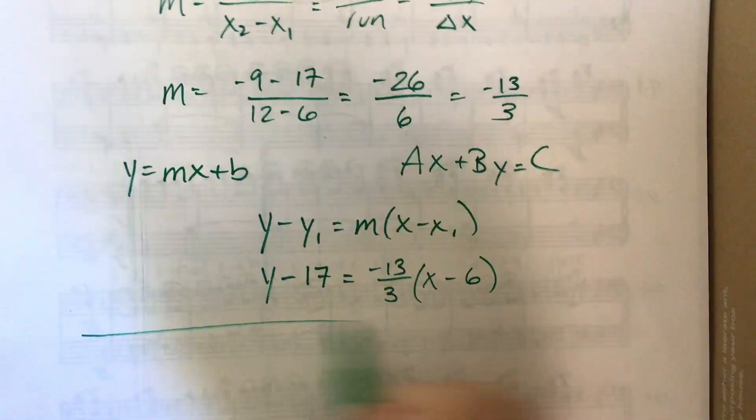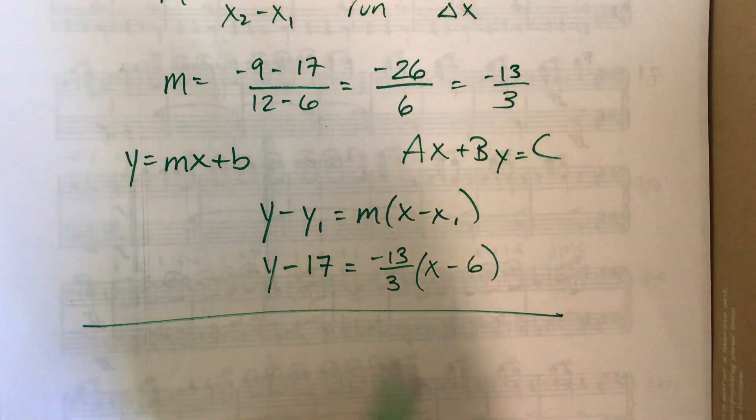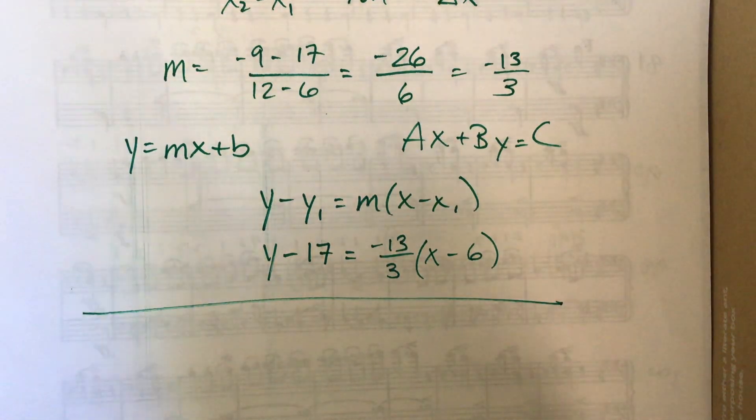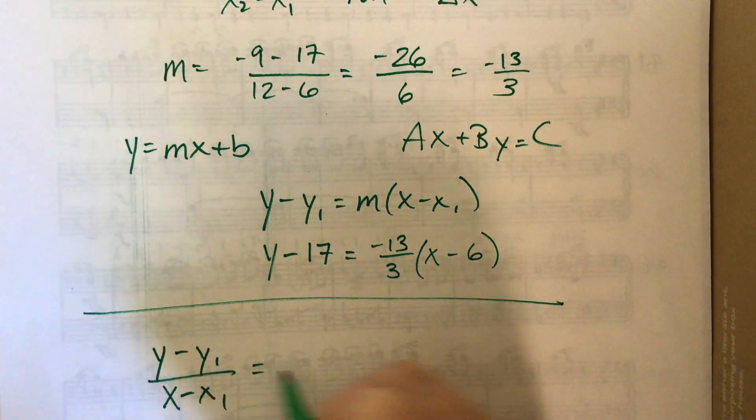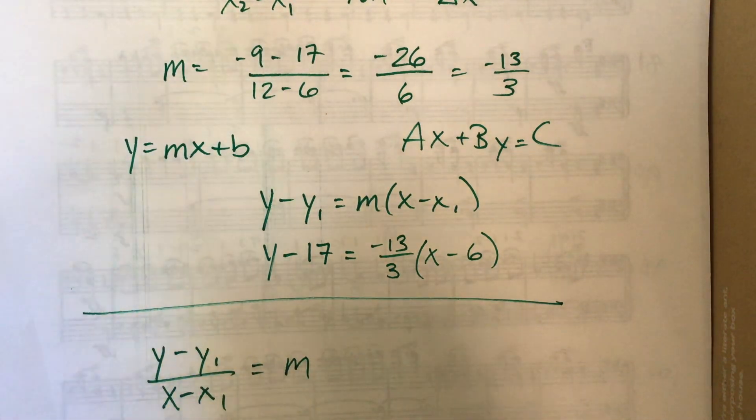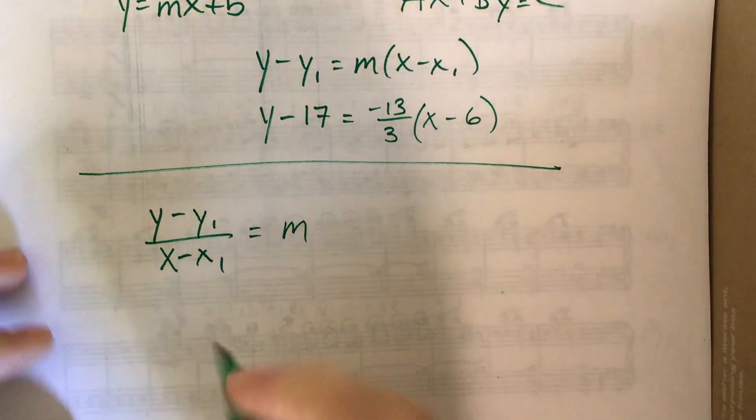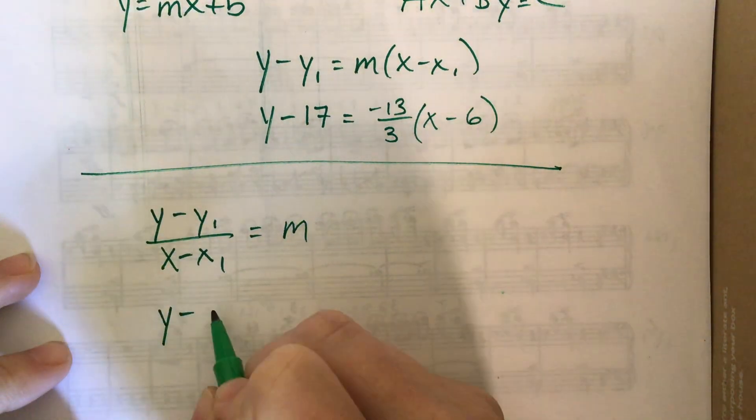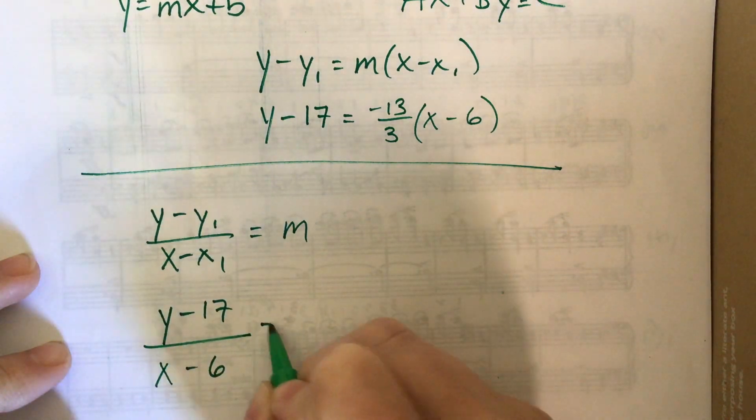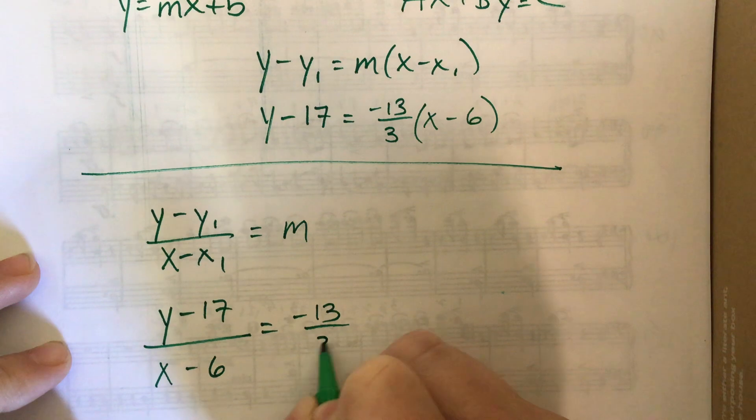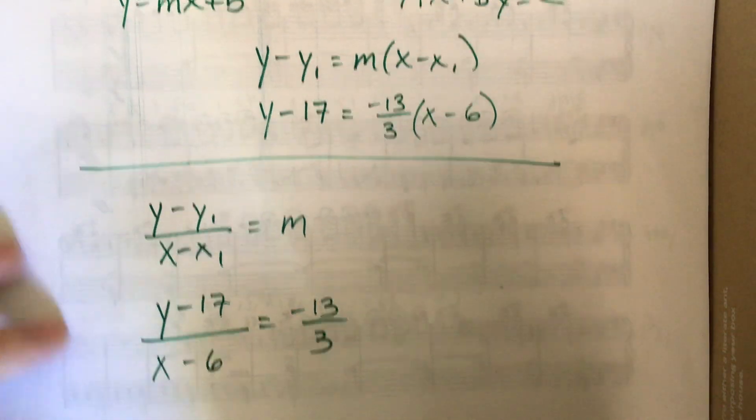Let me show you what I like to do sometimes and that's I take the gradient, I'm trying to use that word formula, y minus y1 over x minus x1 and set that equal to the gradient. So what I could say here is it's y minus 17 over x minus 6 is equal to negative 13 over 3. And now I cross multiply.